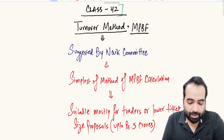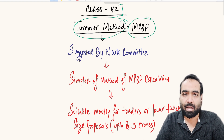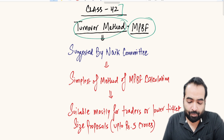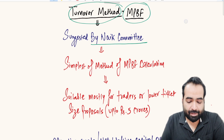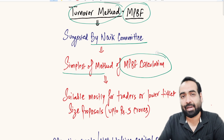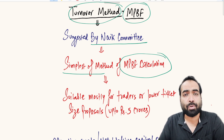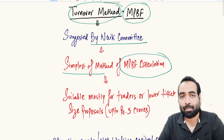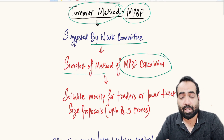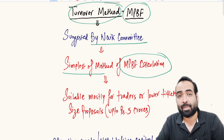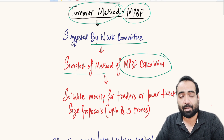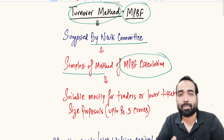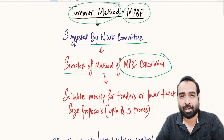Starting with class number 42: the turnover method of MPBF. MPBF means Maximum Permissible Bank Finance. This turnover method was suggested by the Nike Committee around 20-30 years ago. It is the simplest and most famous method of MPBF calculation. Even if you ask shopkeepers in local markets, they know that the bank gives around 20 percent of sales as an OD or CC limit — that is the turnover method recommended by the Nike Committee. It is most famous because it is very easy and simple to understand.